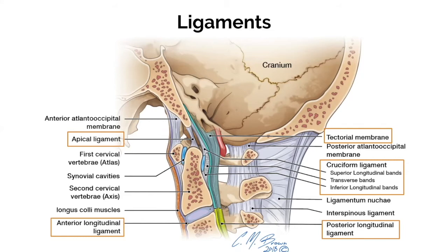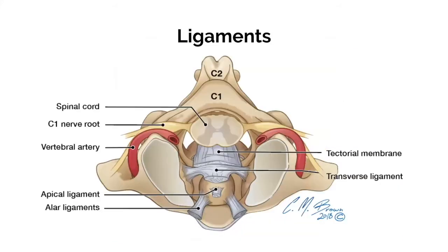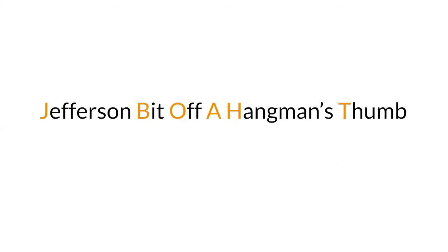Further down the spine you have your ALL and PLL. The alar ligaments join the lateral posterior margin of the dens to the lateral margins of the foramen magnum. They are very strong, limiting axial rotation and contralateral lateral flexion of the head. The alar ligaments, along with the transverse band and the cruciform ligament, are primary stabilizers of the C1-C2 joint. For those of you who like mnemonics, you can remember the unstable c-spine injuries with: 'Jefferson bit off the hangman's.'